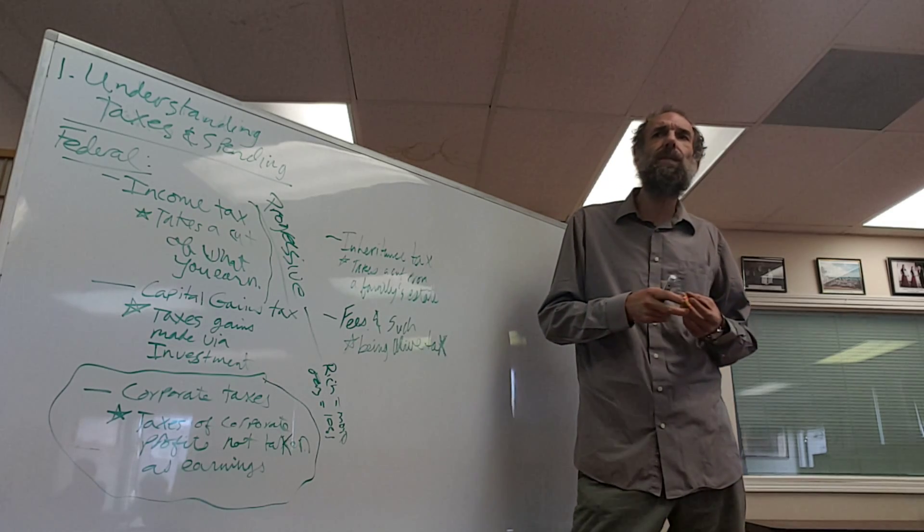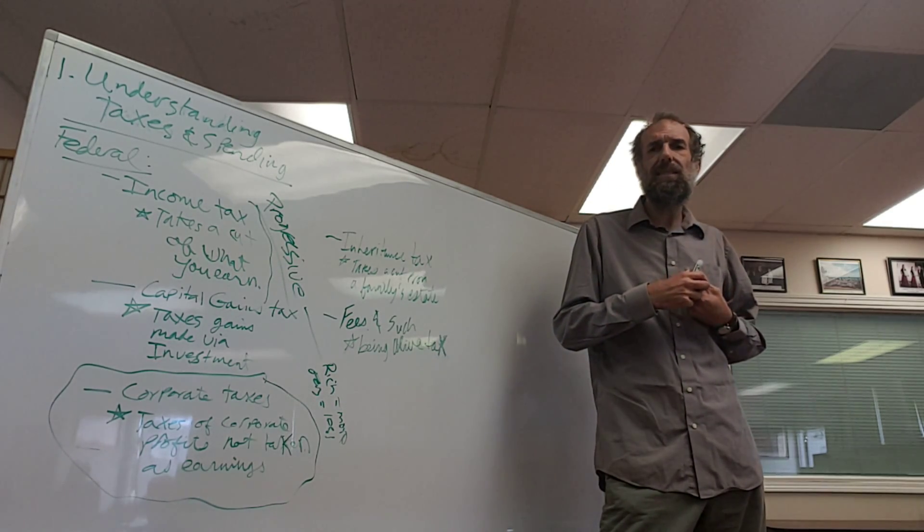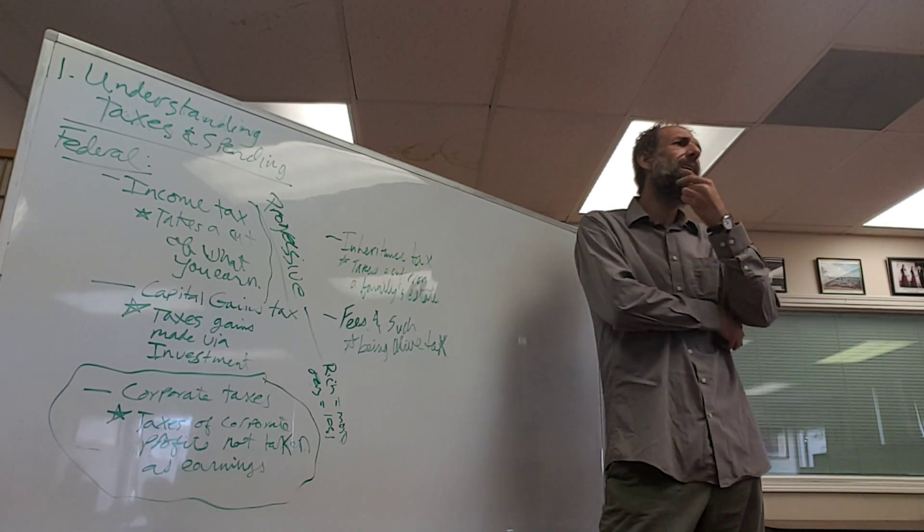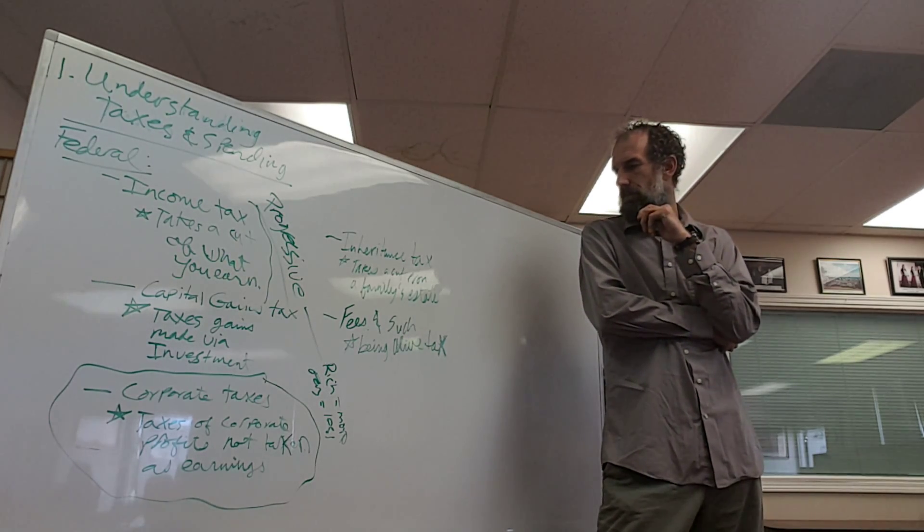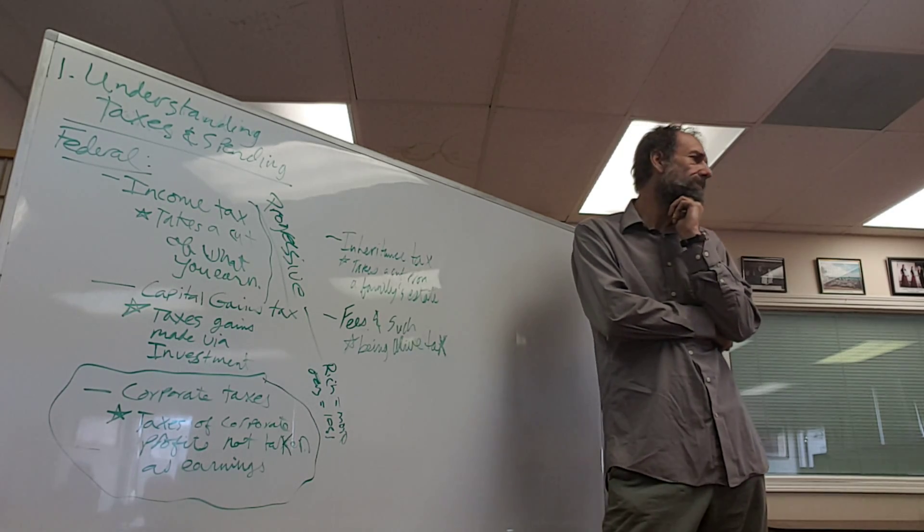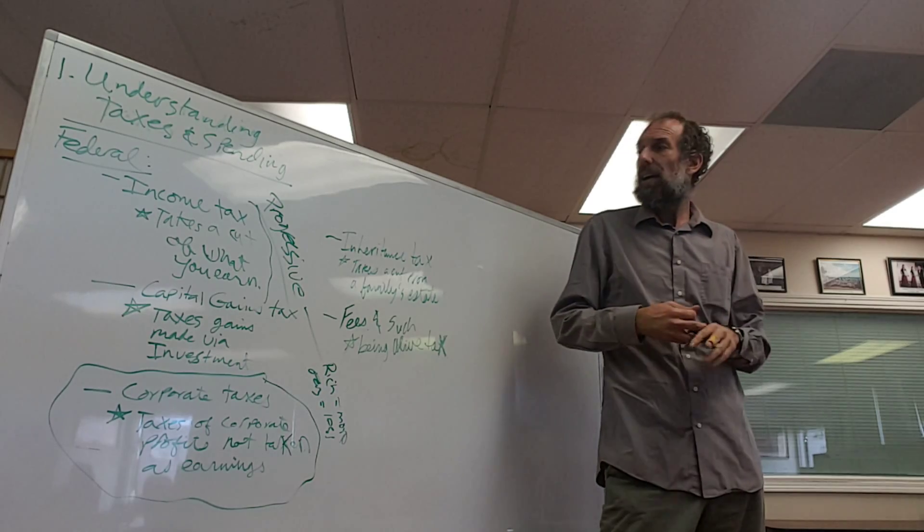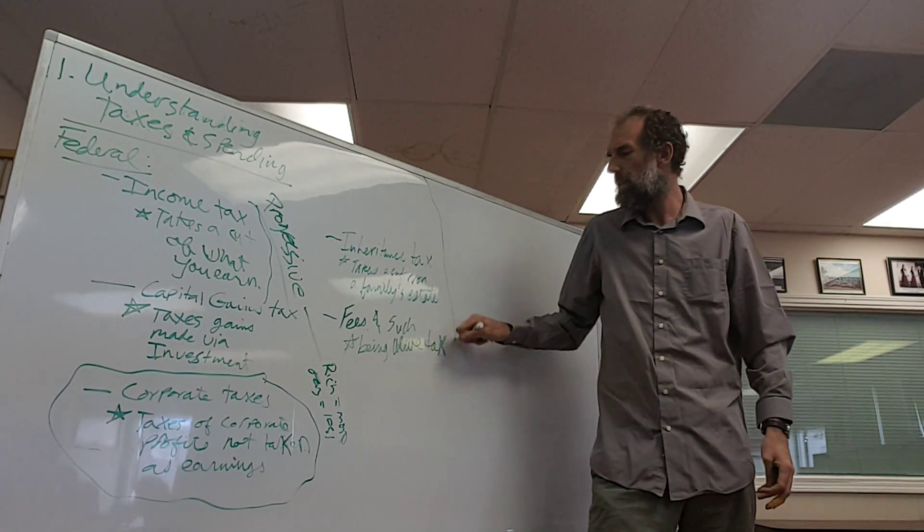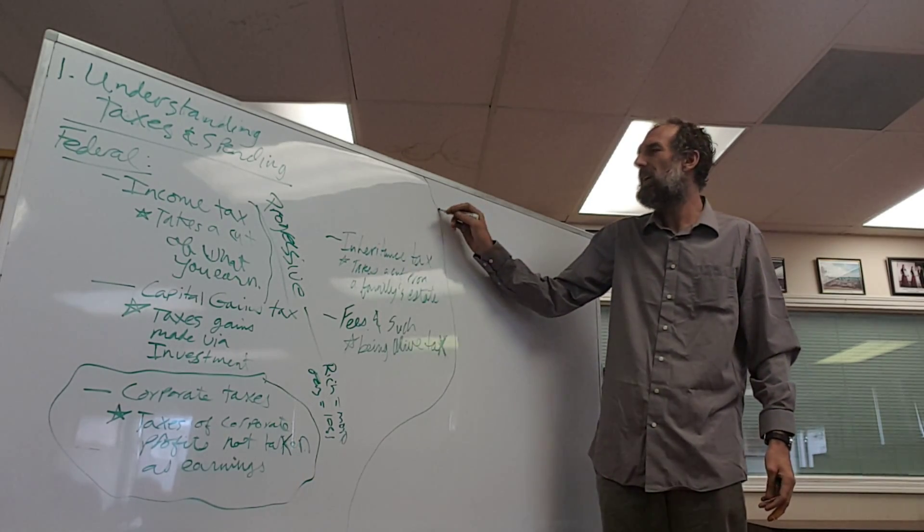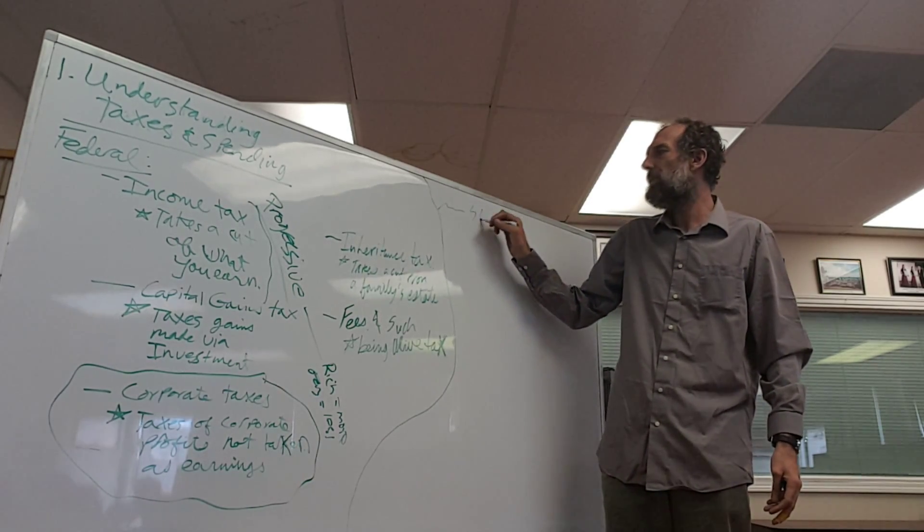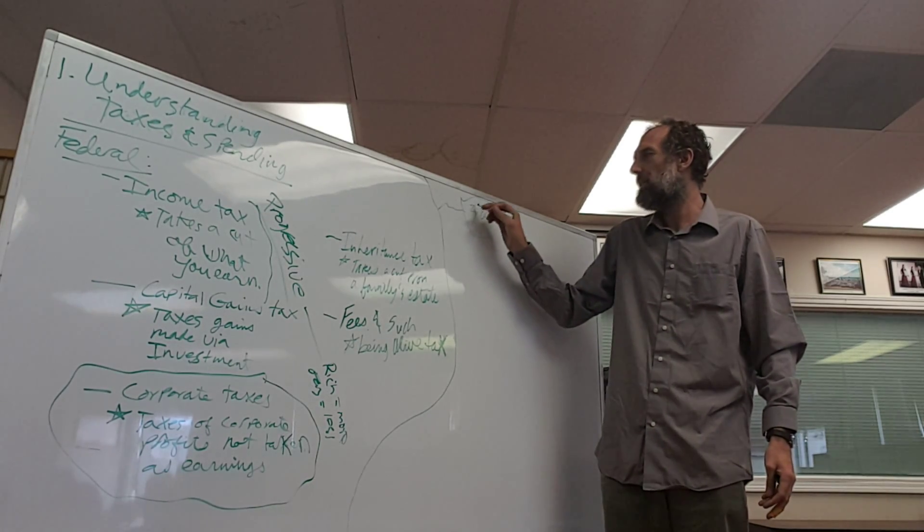Why should the federal government be able to take a tax from every citizen for being alive? I don't know either. However, be aware that the federal government takes zero taxes or approximately zero taxes. The federal government takes very few taxes for almost half the people. About 50% of Americans don't pay federal taxes. They don't pay federal income taxes.